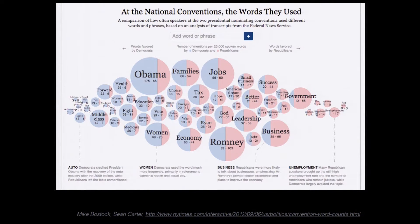The split corresponds to who used a word more—Democrats obviously said 'Obama' more. But at the same time, you can see that certain words were used more by specific parties: 'women' and 'middle class' were used more by Democrats, whereas 'government' and 'business' were used more by Republicans. That's really interesting—you can very quickly see themes we kind of knew existed, and actually confirm them with the rhetoric people were using.